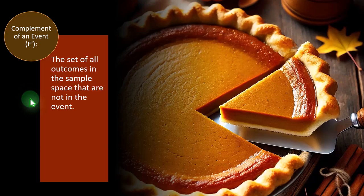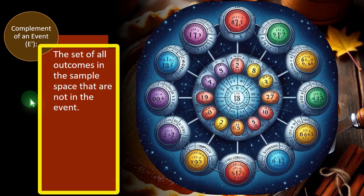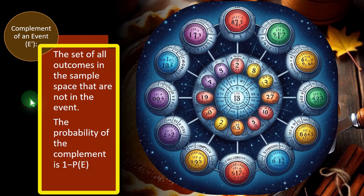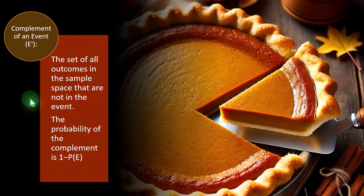Complement of an event: the set of all outcomes in the sample space that are not in the event. The probability of the complement is one minus the probability of the event. So in the dice situation, if we're looking for a four, the likelihood of it happening is one divided by six. That means the likelihood of it not happening — the complement — is five out of six. The complement and the event's probabilities must add up to 100%, which gives us a kind of double-check, similar to the double-entry accounting system.